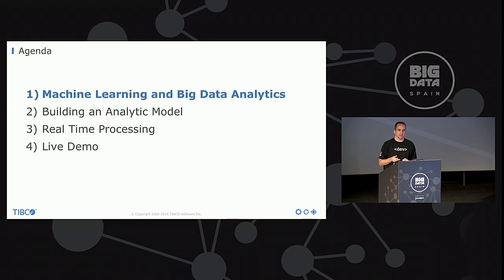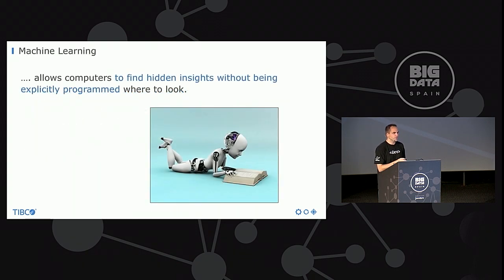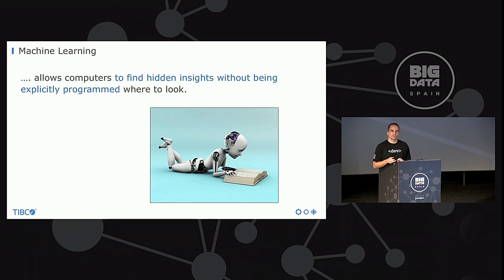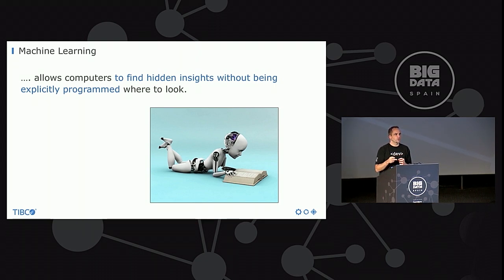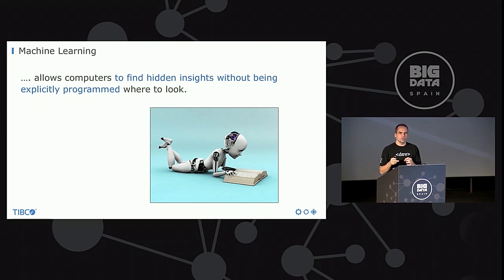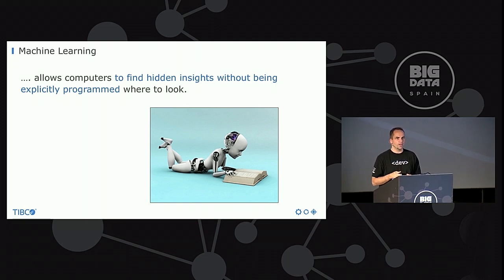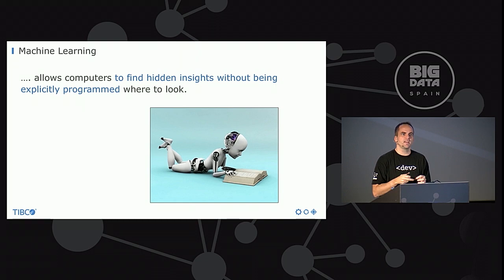Let's begin with a short explanation of what machine learning is. Machine learning helps you find hidden insights without being explicitly programmed. Coming from a Java developer background, we wrote a lot of if-else clauses, conditions, and for loops — we explicitly programmed everything. But now with all these big data sets, we cannot do that anymore. Therefore we want to leverage machine learning so that the computer by itself understands the patterns in historical data and you can leverage that. That's basically the definition.